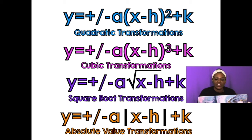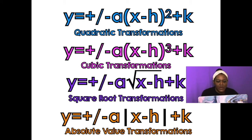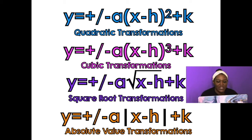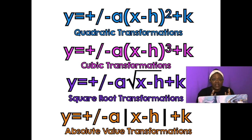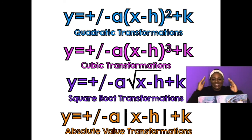Cubics look the same except instead of a squared in the equation, there's a cube. Square roots — instead of a squared or a cubed, you're going to have a vinculum, a radical, whatever you want to call it. And for absolute value, instead of a radical, you're going to have absolute value bars. But the A, the H, the K, the plus or minus — all of those things still do the same things and are in the same position.